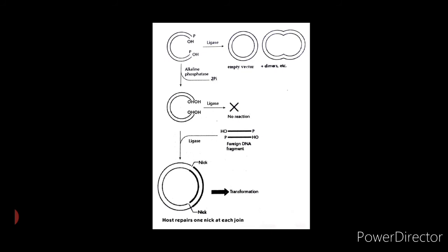One nick at each join remains unligated, but this is maintained stable by virtue of base pairing along the two strands. It remains stable at 37 degrees Celsius as a double-stranded molecule. After transformation of host bacteria, cellular repair mechanisms reconstitute the intact duplex.